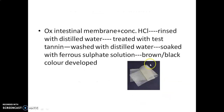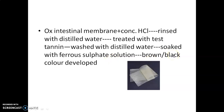The gold beater skin is generally manufactured from ox intestinal membrane. The membrane is treated with concentrated hydrochloric acid, then rinsed with distilled water to remove excess acid. The skin is then treated with the test tannin solution and again washed with distilled water to remove excess tannin from the surface. The skin is then soaked with ferrous sulfate solution — if a brown or black color develops, it confirms the qualitative presence of tannin.